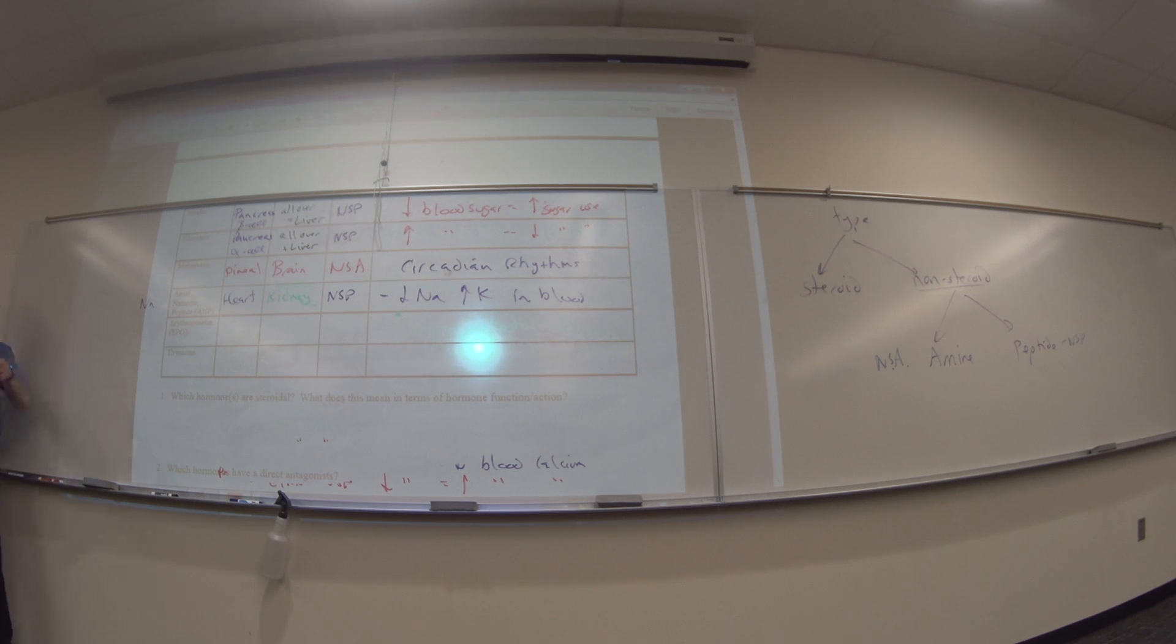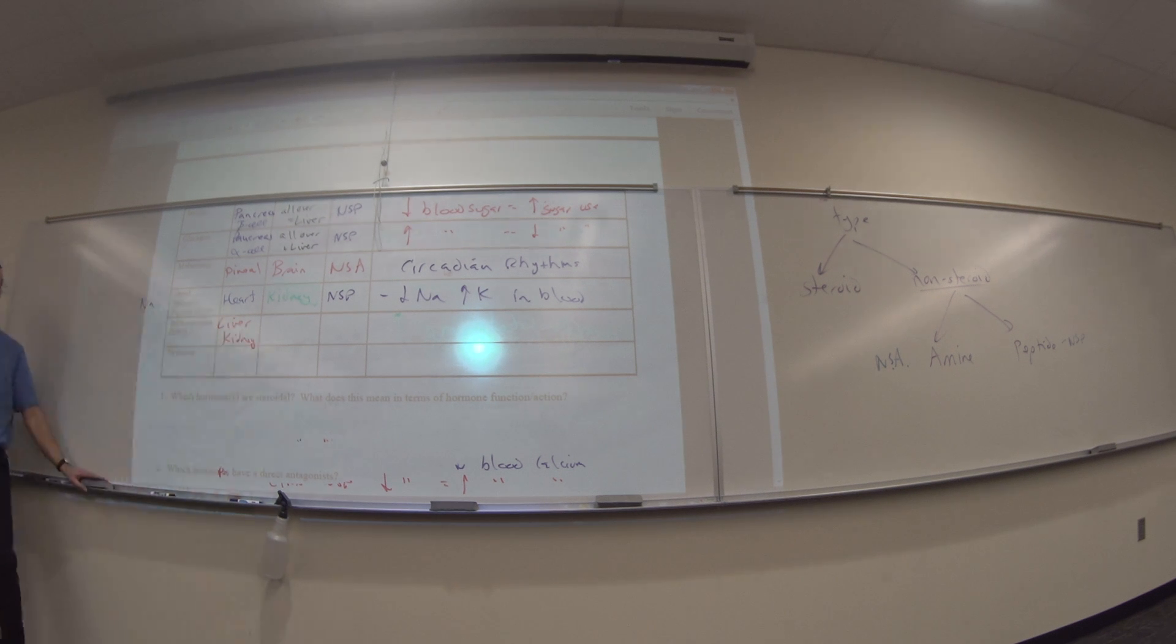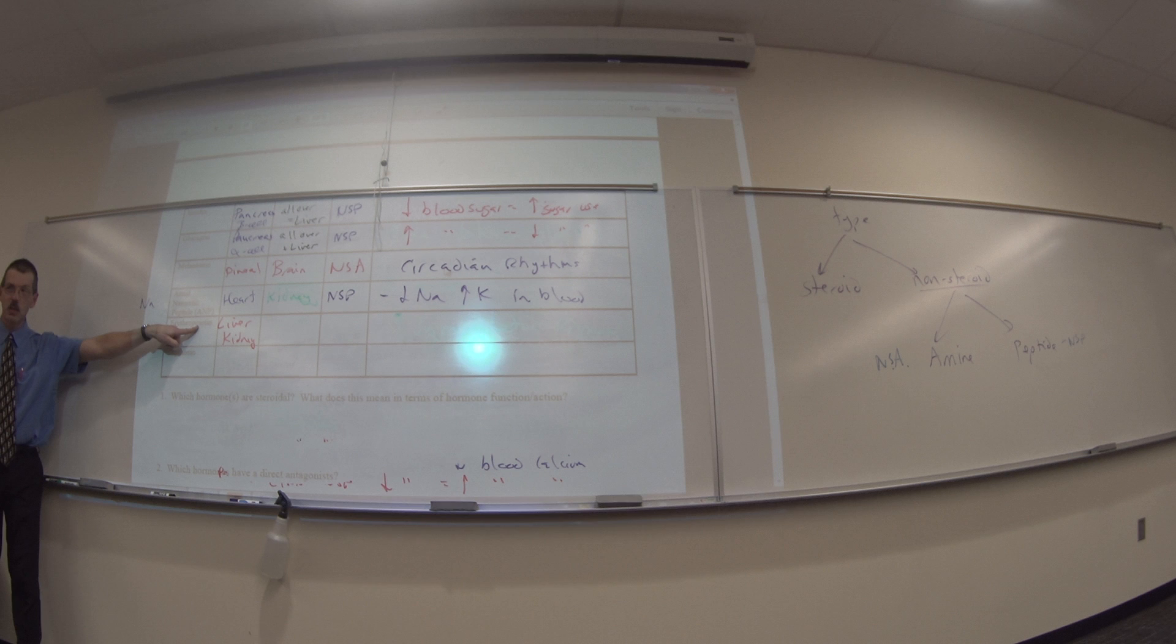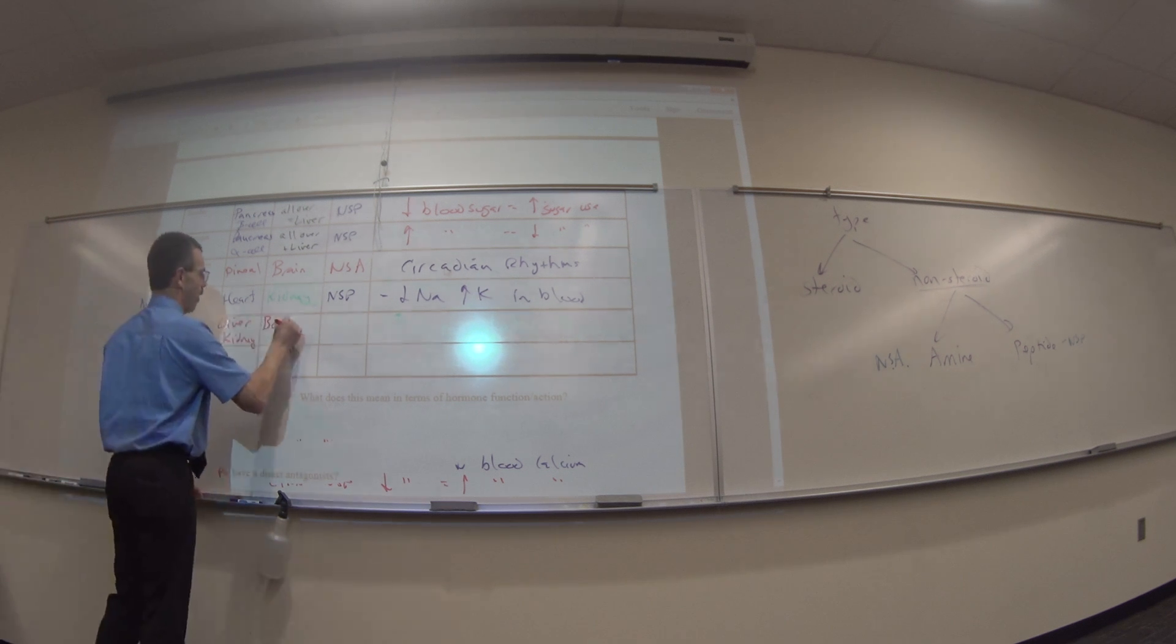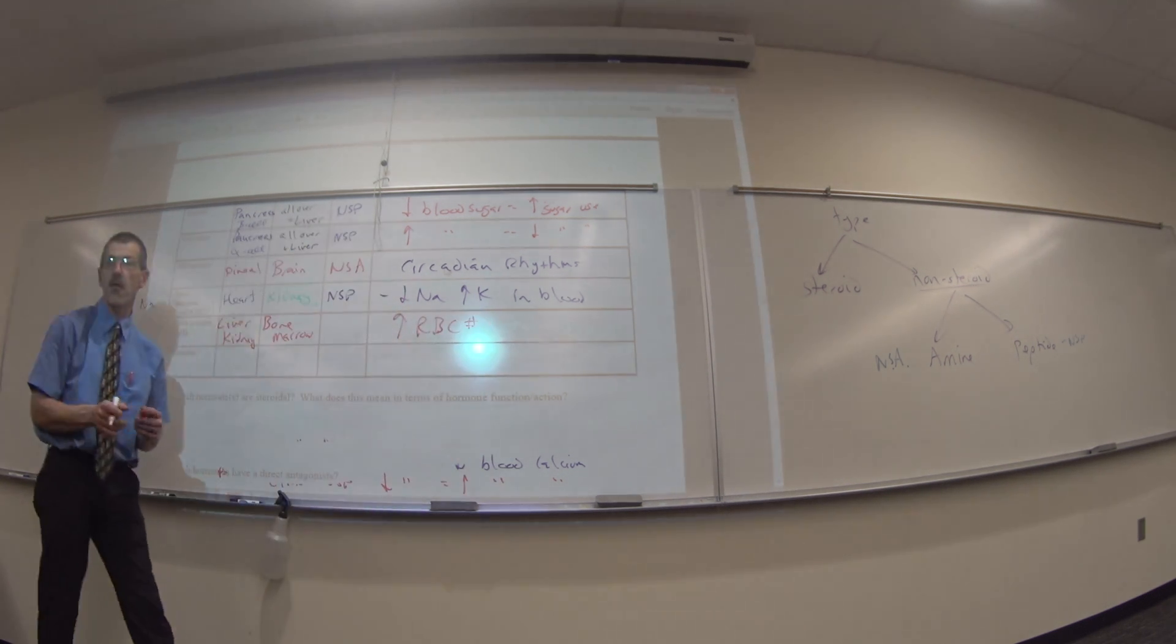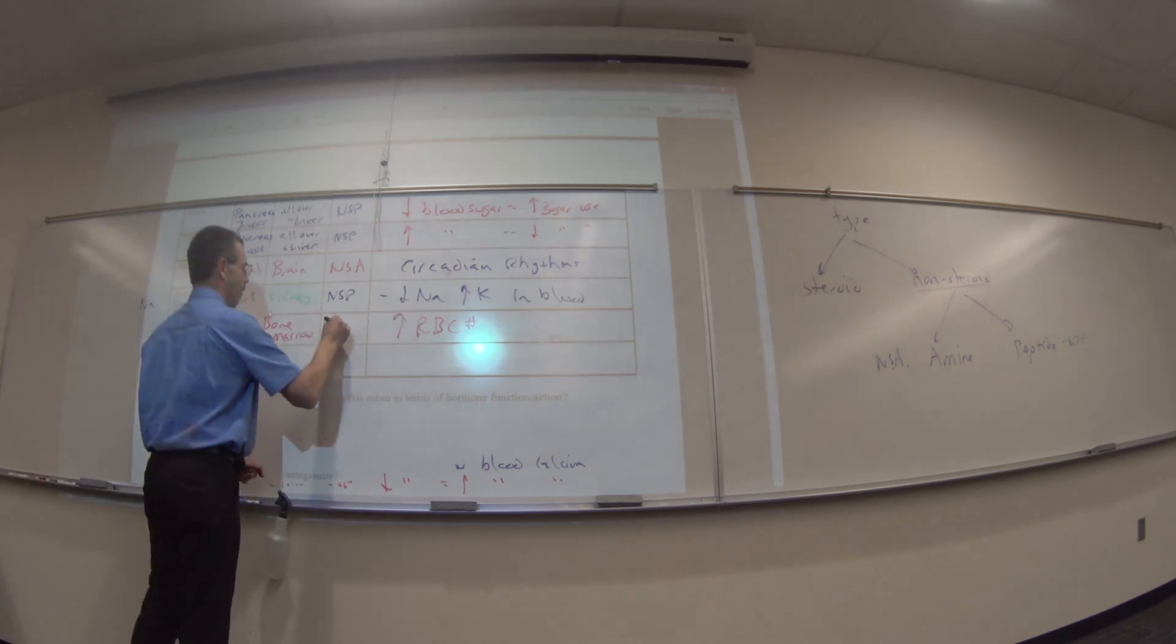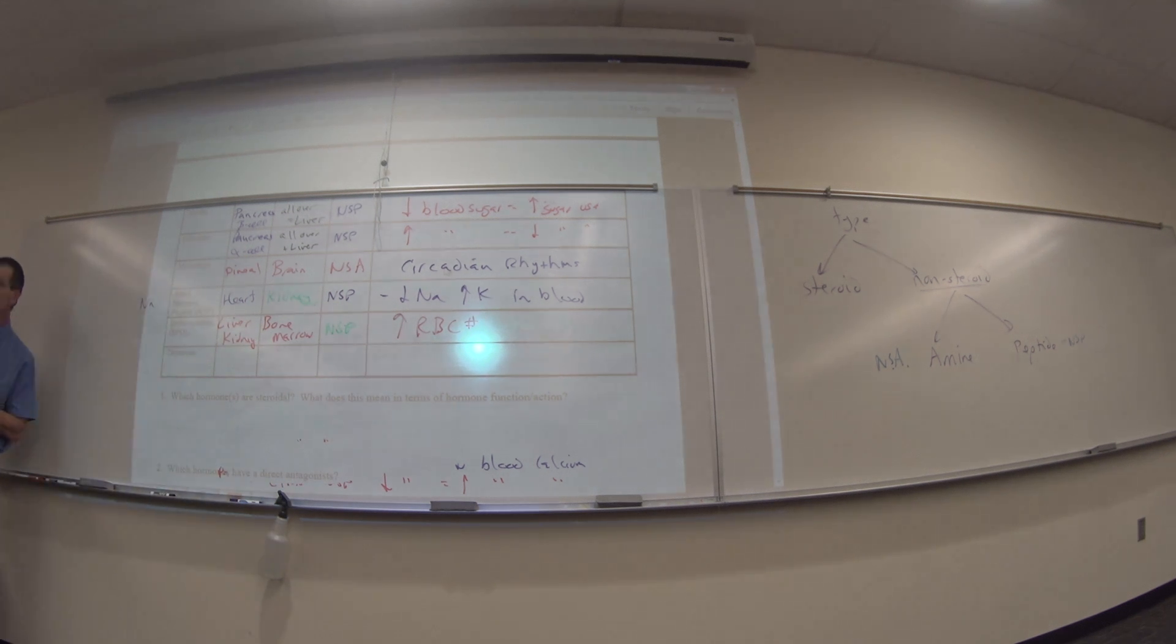Erythropoietin or EPO, which we'll talk about next week. Where is it made? In your liver and your kidneys. Where does it go? Poesis means making more. Erythros are blood cells. Where do you go to make blood cells? Bone marrow. And their job is to increase RBC number. To make more erythrocytes. Erythropoiesis. What type is it? Give me three letters. NSP.